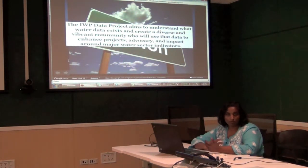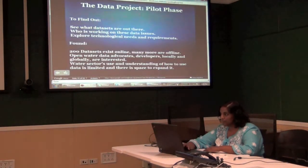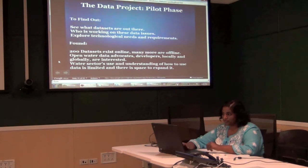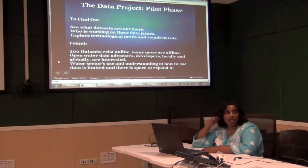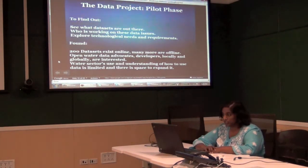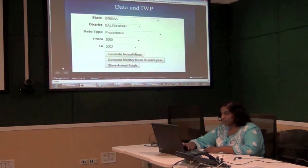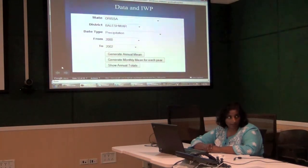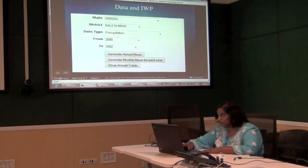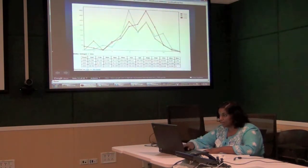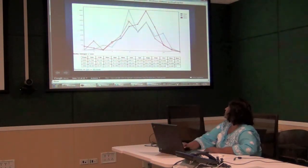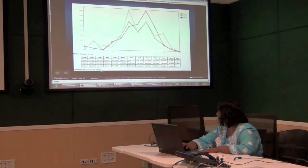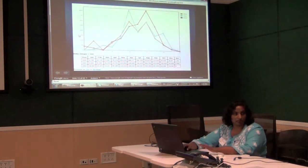The data project is currently in a pilot phase with a lot of research underway. We found 200 datasets online — water data does exist online, we just didn't know it was there. It's trapped in PDFs and not easy to find or use. One of the first projects took 100 years of rainfall and climate change data and put it online. We created a tool where you can input a state, district, data type, and time frame within those hundred years, and generate a graph.